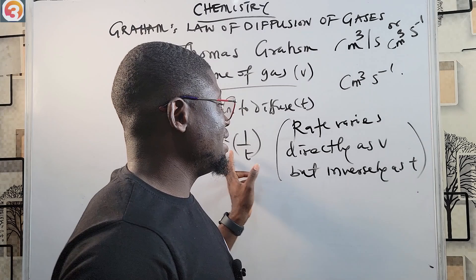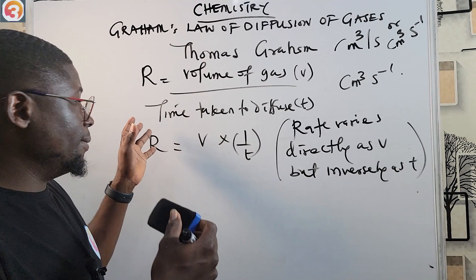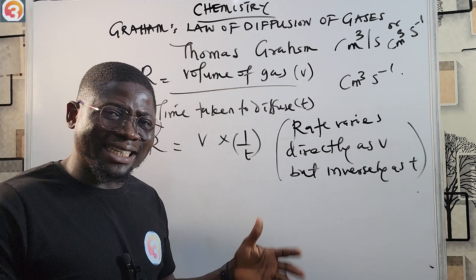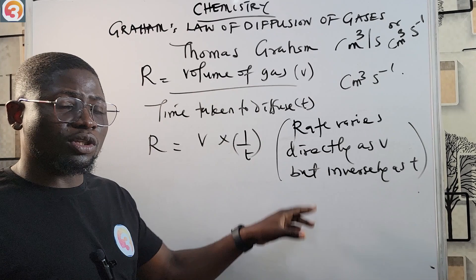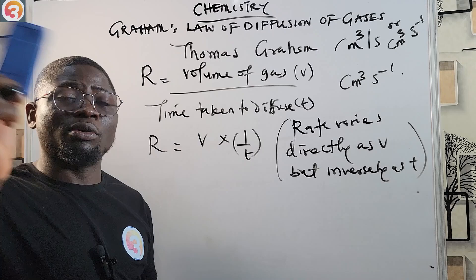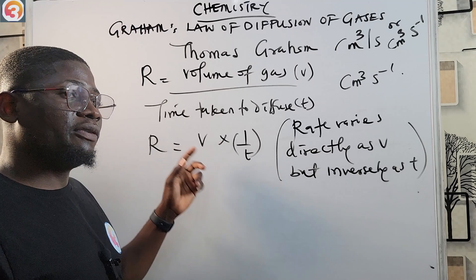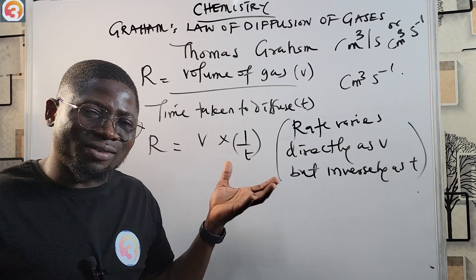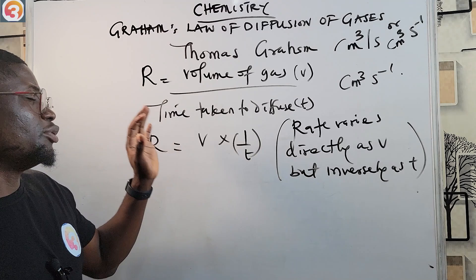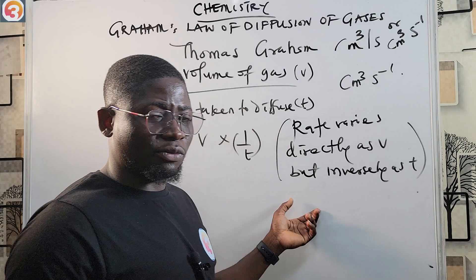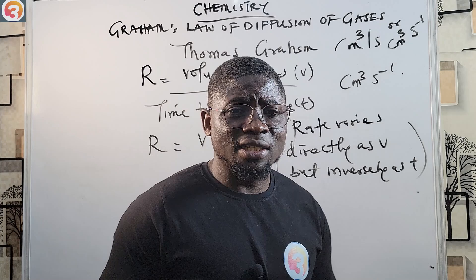When the rate of diffusion increases, volume increases — they move together due to their direct relationship. But when rate decreases, time taken to diffuse increases, because of the inverse relationship. When one goes up the other goes down between R and t, while R and V move in the same direction.